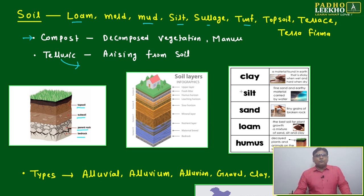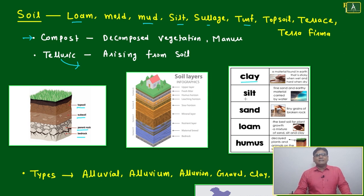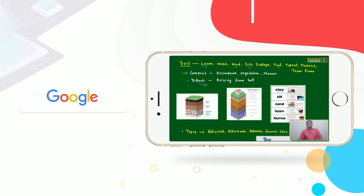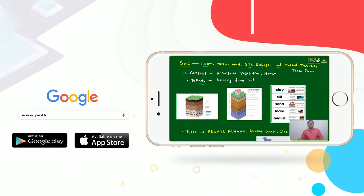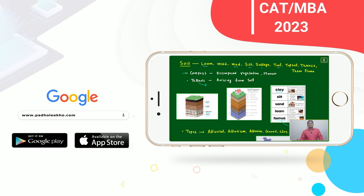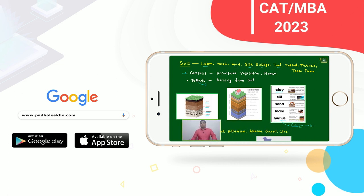The main soil types to remember are: clay, silt, sand, loam, and humus. Humus is a Latin word meaning 'earth,' and from this same root the word 'humus' is derived.